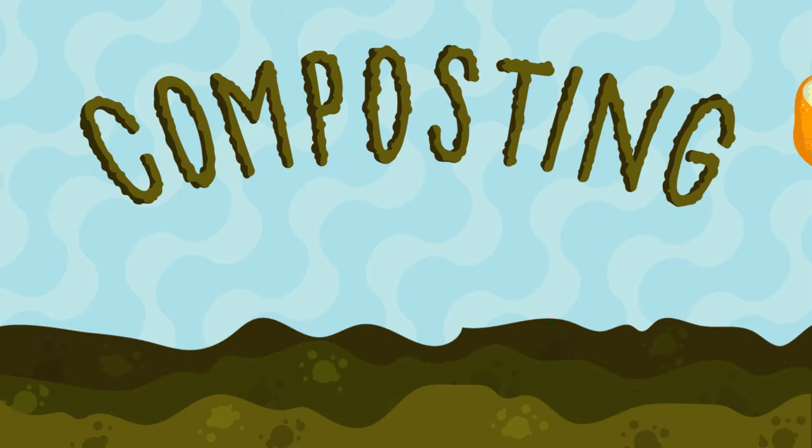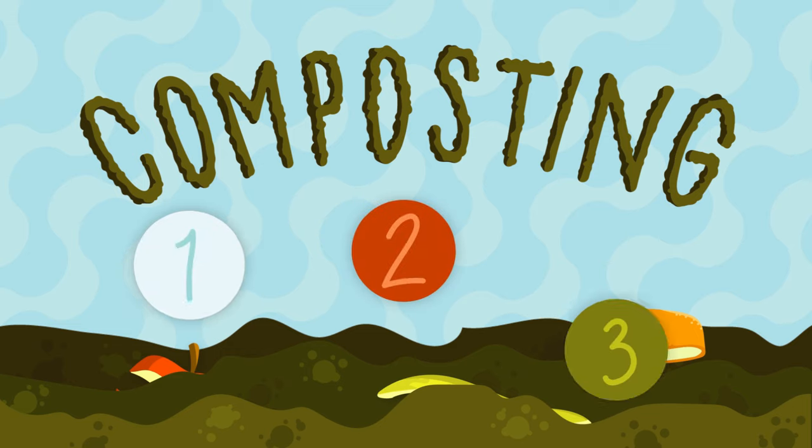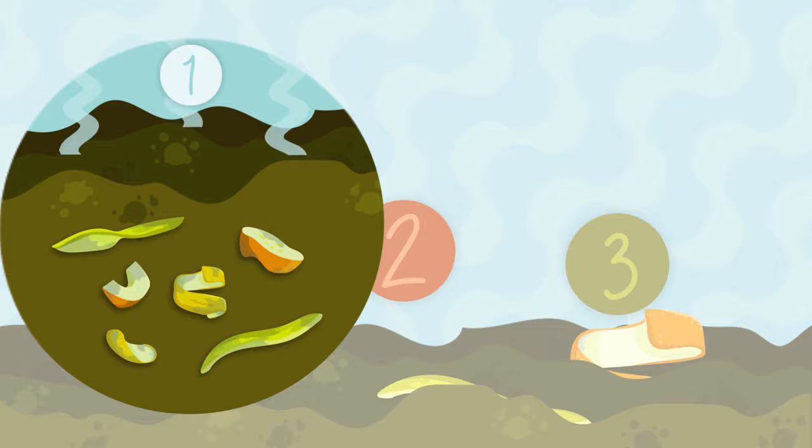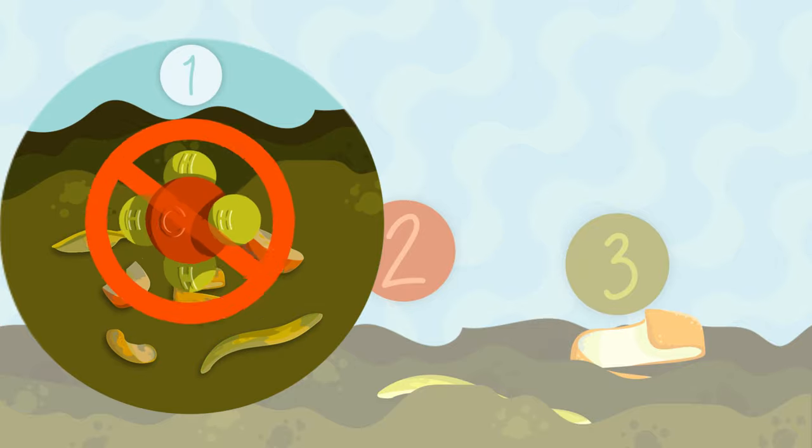Composting is an eco-friendly alternative to discarding our food waste with three important advantages. First, composting allows food scraps to degrade in the presence of oxygen, meaning no methane is produced.